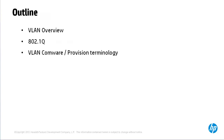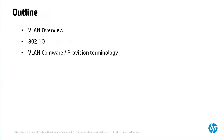On HP switches running the Comware operating system, you would configure trunk ports and access ports. On HP switches running the Provision operating system, however, you configure tagged and untagged ports. I'm going to spend a bit of time explaining the differences between these terms, as they can cause a lot of confusion.